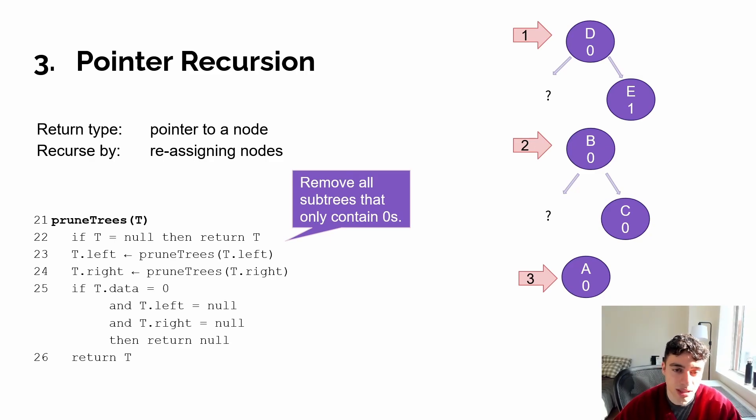Frames four and five would operate on A's left and right child being null, both returning null. And then A would be evaluated to see if it's a leaf node, which it is, and that its data value is zero, which it is. Because of this, it would be returned as null. And B's left assignment would be completed by assigning it to null.